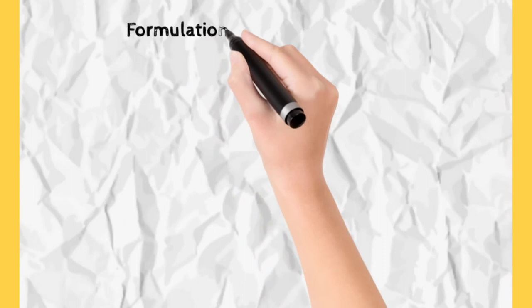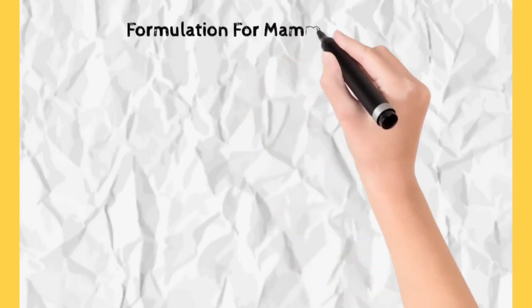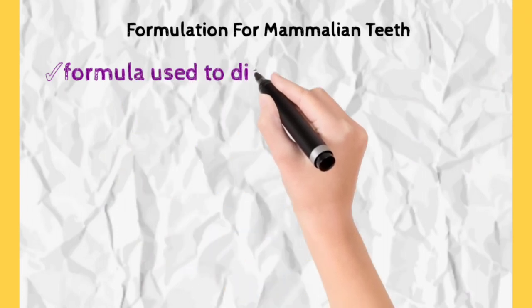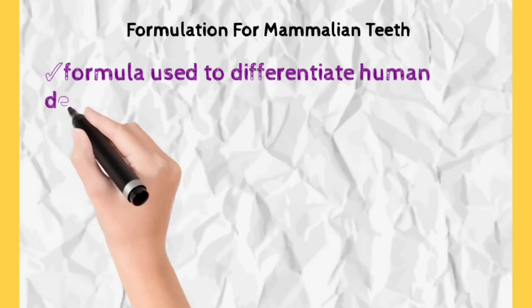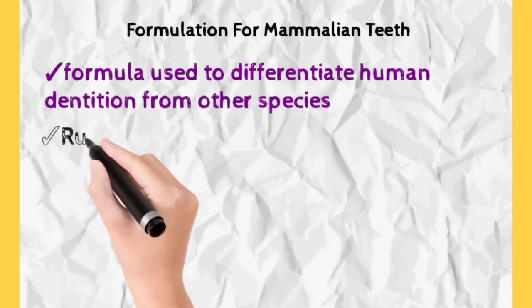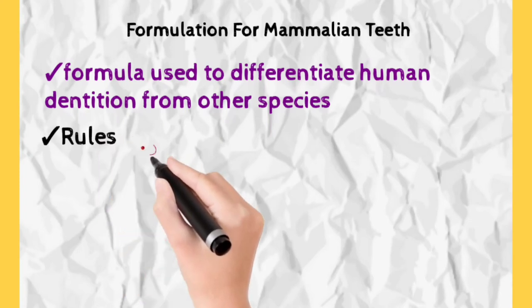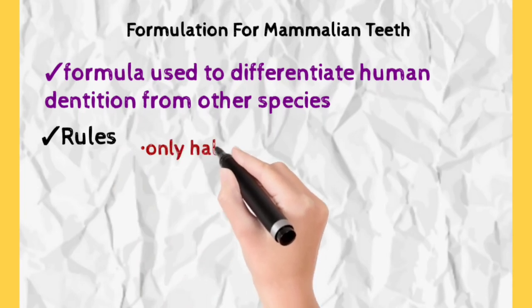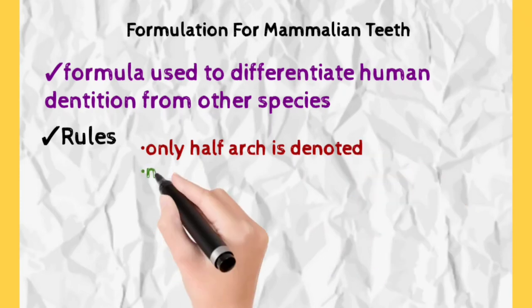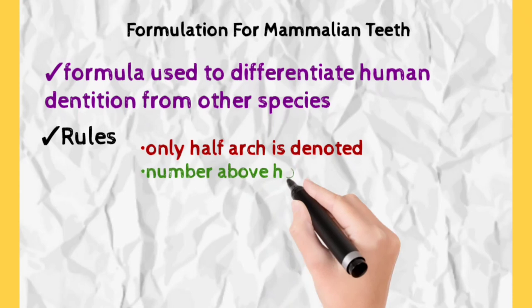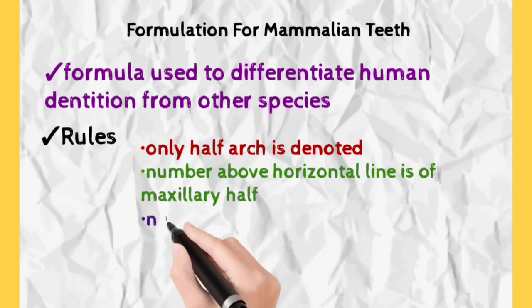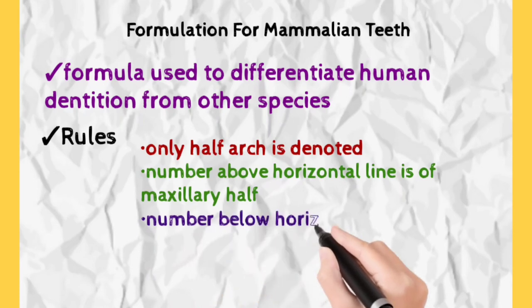Now let us look at the formula of mammalian teeth. What actually is dental formula? Dental formula is the formula used to differentiate human dentition from other species. There are certain rules to write dental formula. Usually maxillary and mandibular arch are denoted by a line. Above the line are maxillary teeth, below the line are mandibular teeth. We don't give complete arch tooth number, we only give half arch tooth number. So in dental formula we write only half arch teeth. Line above represents maxillary teeth, below represents mandibular teeth.